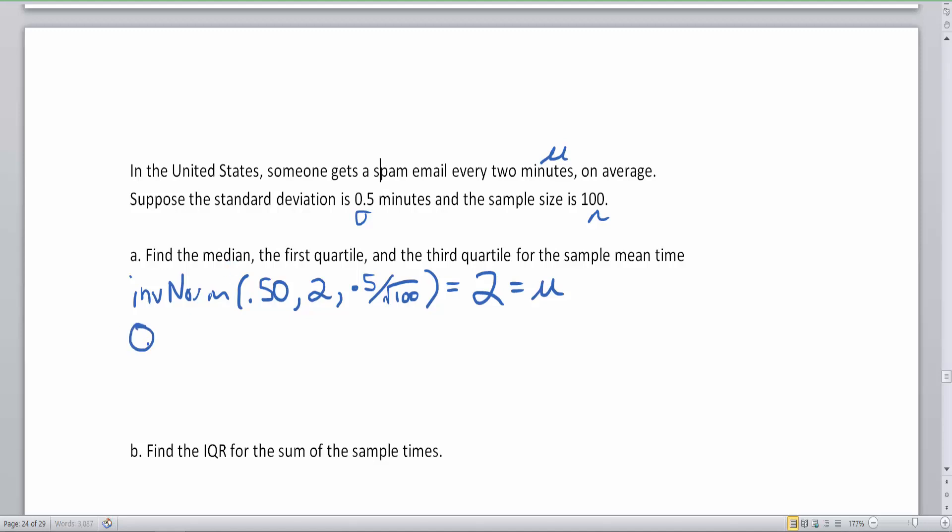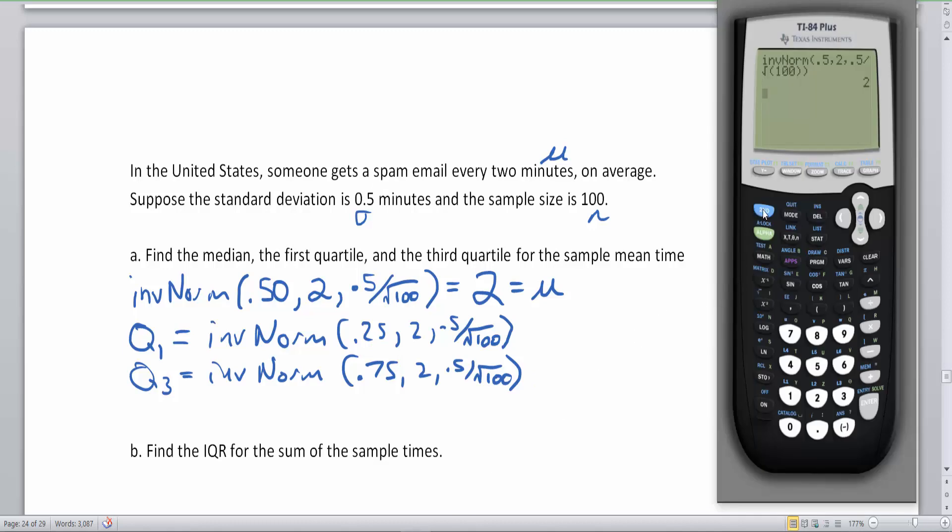So 2 is going to be our median. Now let's do the first quartile Q1. The Q1 is going to be the inverse norm 0.25 comma 2 comma 0.5 divided by square root of 100. And then you can see that the Q3 is going to be the inverse norm at 0.75 comma 2 comma 0.5 divided by square root of 100. So let's go second vars, move down to inverse norm. We're going to change our area to 0.25. Now everything else stays the same. So I click through my enters and hit enter one more time and that gives me 1.97.